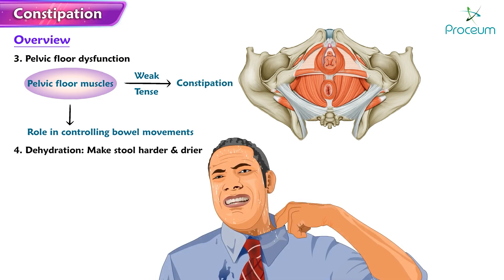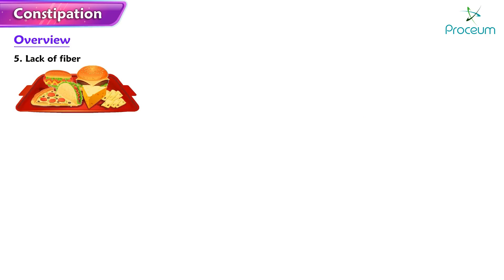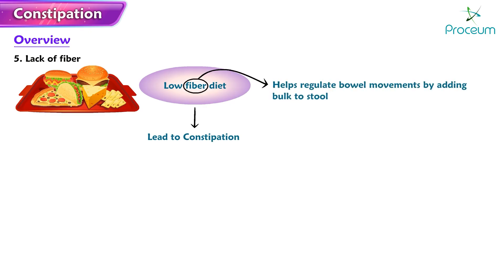Four: dehydration. Dehydration can lead to constipation because it can make the stool harder and drier. Five: lack of fiber. A diet that is low in fiber can lead to constipation because fiber helps regulate bowel movements by adding bulk to the stool.